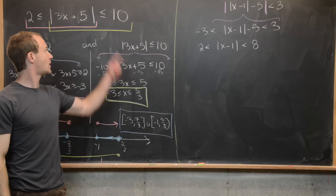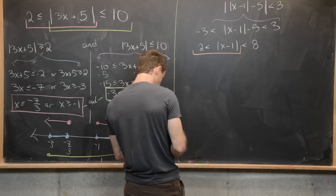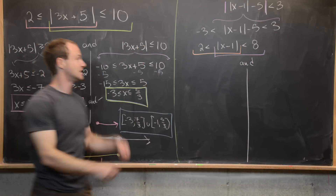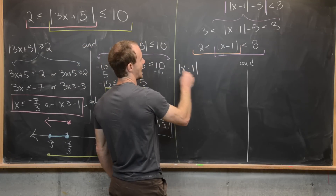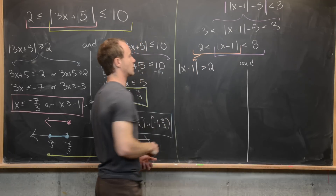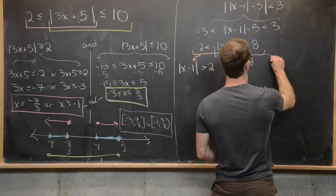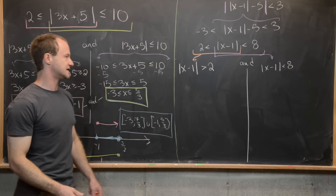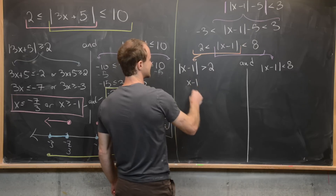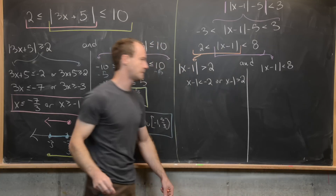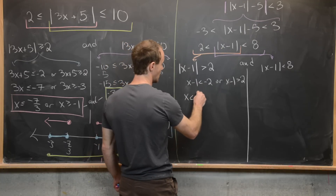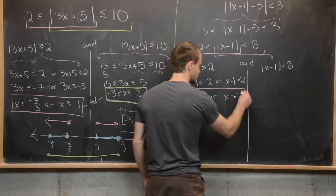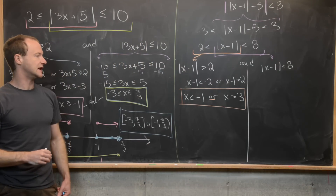We split this into two parts with an AND between them, underlining each in different colors. From the orange part, the absolute value of x minus 1 is bigger than 2, which gives us two cases: x minus 1 is less than negative 2, or x minus 1 is bigger than 2. Solving those, x is less than negative 1 or x is bigger than 3. That is the condition for the orange underlined inequality to be satisfied.